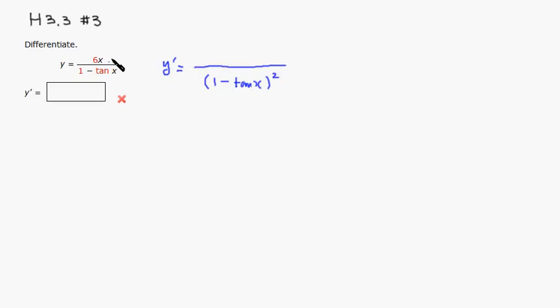And 6 is just a constant multiple, so I'll put 6 right in front. Then, the derivative of x is 1 times the bottom, which is 1 minus tangent of x.